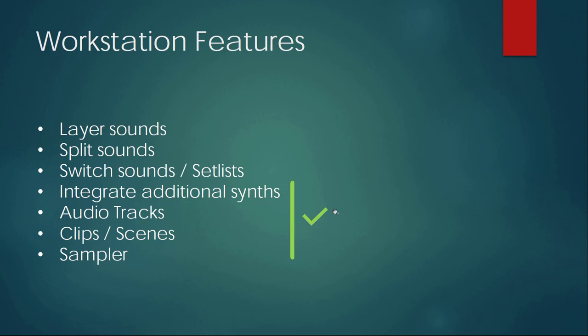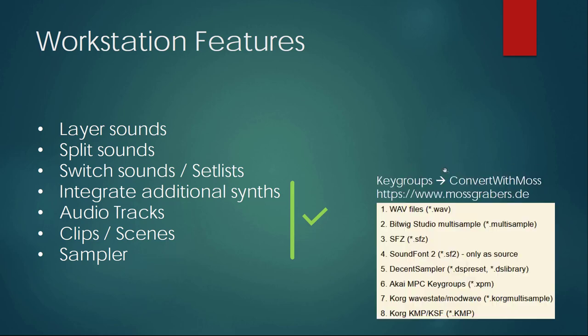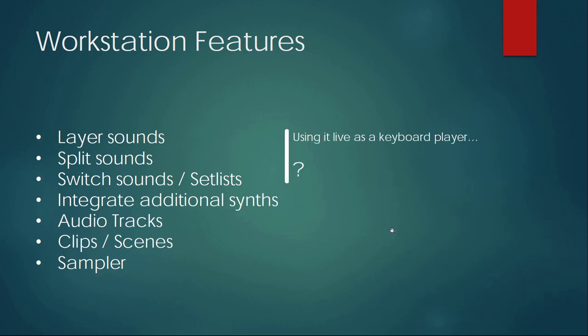You also want to integrate additional synths, have audio tracks or fire clips in the background, and have high-quality sampled sounds from your DAW available on stage. A good multi-layer sampler is essential. This is the main area where MPCs excel - they have great connectivity, ability to connect additional audio cards, trigger sequences, and the keygroup sampler is really powerful. I also made a free tool called ConvertWithMoss that converts open sample formats for use in MPC keygroups.